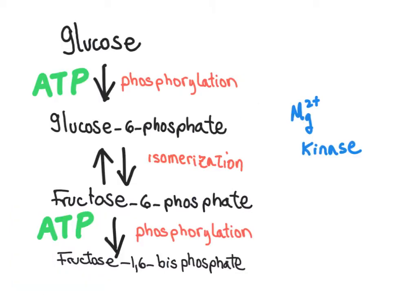When glucose enters the cell, it is immediately phosphorylated on carbon number 6. It uses an ATP molecule in a reaction catalyzed by hexokinase. When energy is needed, glucose will go through the glycolysis pathway, but when the cell is in need of the coenzyme NADPH, glucose-6-phosphate will enter the pentose phosphate pathway.